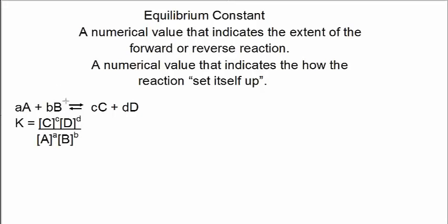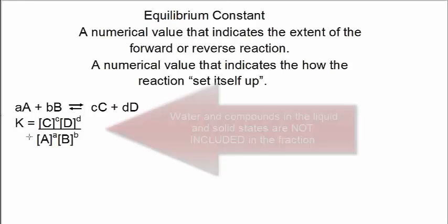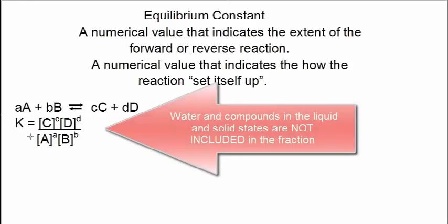To the left here on the screen is a generic chemical reaction: two reactants producing two products in equilibrium. And this fraction here, K equals [C][D] over [A][B] with the exponents, is in fact the equilibrium constant expression for this general chemical reaction.